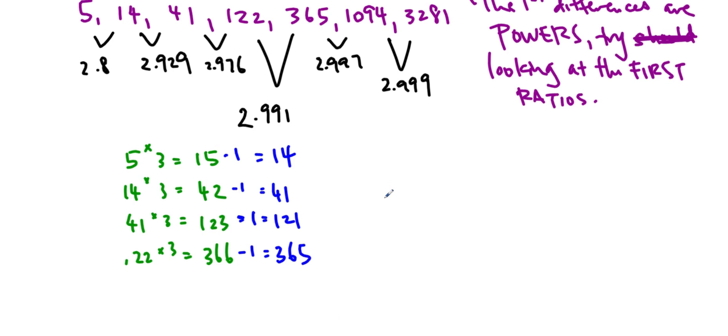That tells me that my recursive formula is actually going to involve a times 3 and a minus 1. So remember when you do a recursive formula, you do need to define the first term. It is 5, and then we're going to define the general term by the previous term. So t n minus 1 times 3 minus 1, because that's what we found as our operation, and that is our answer.